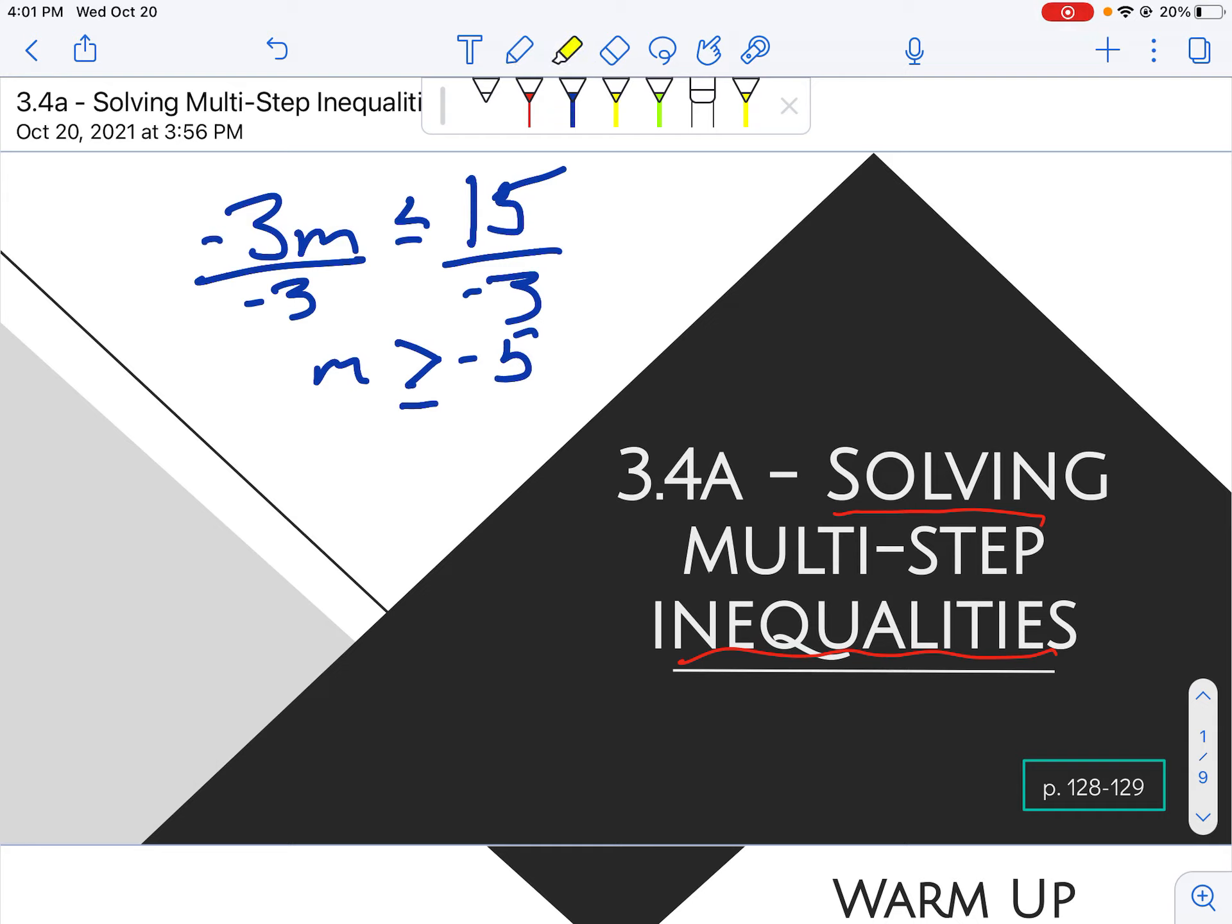So we started with the less than or equal to sign, but then since we divided by a negative 3, we had to change the sign. Just flip it to greater than or equal to. That's what we added yesterday, or earlier this week.